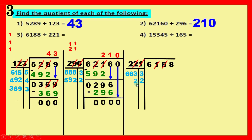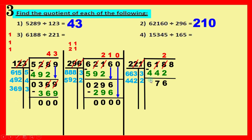Try two: two times one equals two, two times two equals four, two times two equals four — giving four hundred and forty-two. We have six hundred and eighteen which is more, so two works. Write it above — above the eight, since that's the first digit we're working with. Write its answer below, draw line and minus. Eight minus two equals six. One minus four — can't do it, borrow one. Borrow from six, becomes five; one becomes eleven. Eleven minus four equals seven. Five minus four equals one.